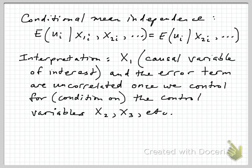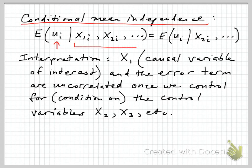The key assumption or condition that has to hold is conditional mean independence. Mathematically, what it says is that the expected value of the error term, conditional on all the variables in the regression — all the regressors x1, x2, etc. — is equal to the expected value of that error term conditional on all the variables except x1. In other words, if we think of x2, x3, x4 as the control variables, the expected value of the error term with all variables included is the same as it would be with just the controls.